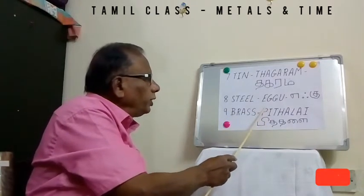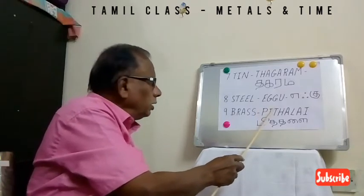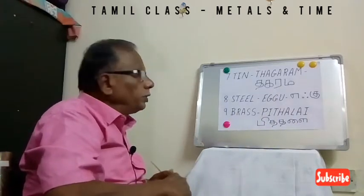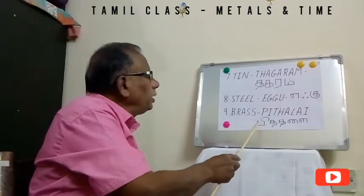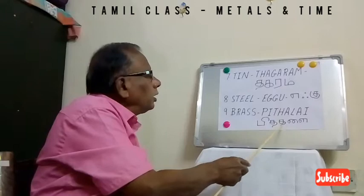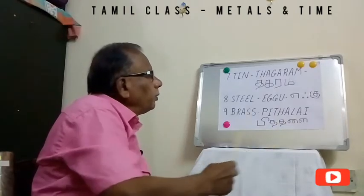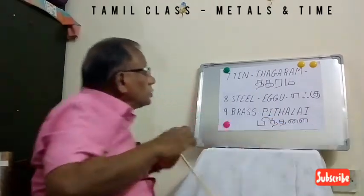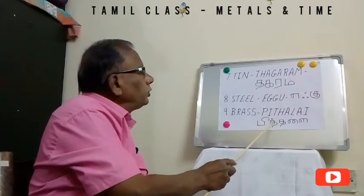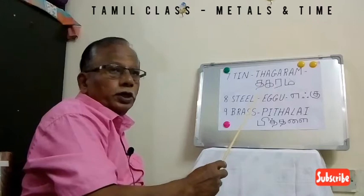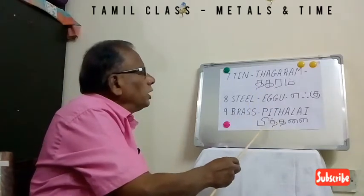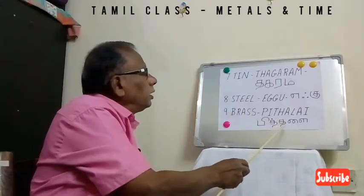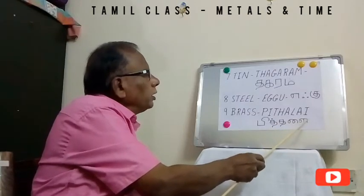The ninth one is Brass. For brass it is called Pithalai — in Hindi they call it Pithal. Written in English: P-I-T-H-A-L-A-I. In Tamil: P, It — whenever there is a dot I told you it is a consonant — then Tha, the line. So it is called Pithalai.